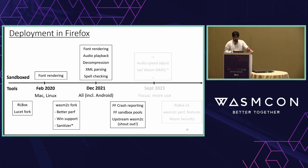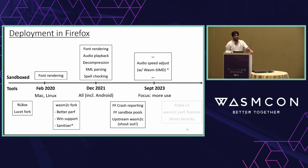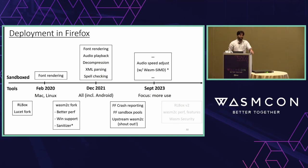Where we are today: we are sandboxing more libraries. One worth calling out is an audio speed-adjusting library that requires SIMD, so we are deploying this with WASM SIMD support — about 20 million users using WASM SIMD in this setting. It's a pretty good stress test for folks looking at WASM SIMD performance compared to native SIMD, or evaluating relaxed WASM SIMD.